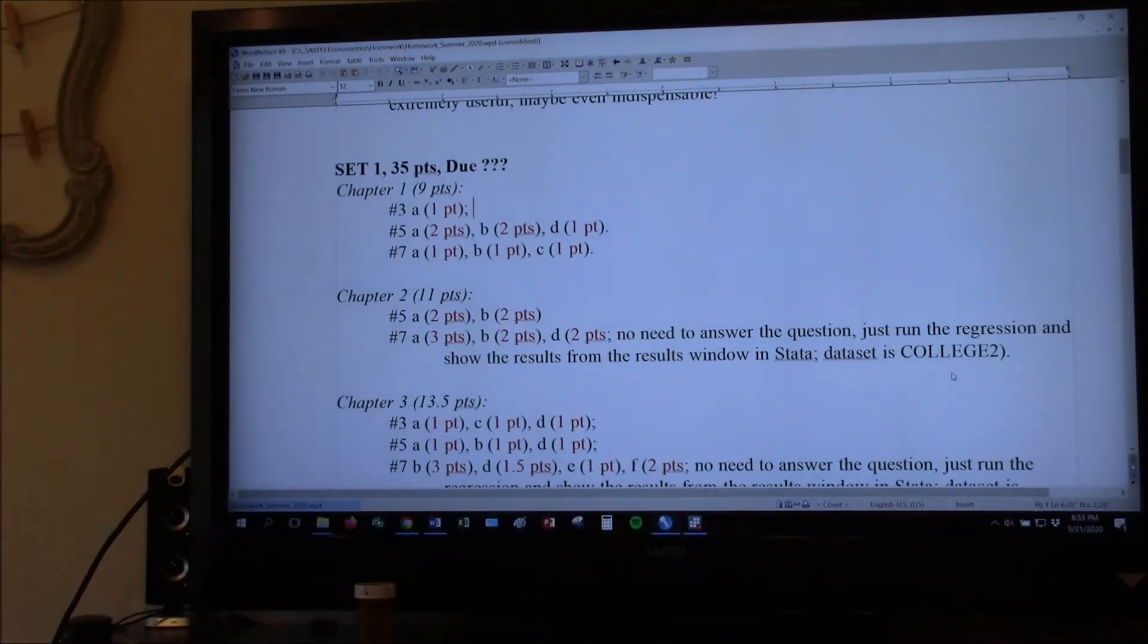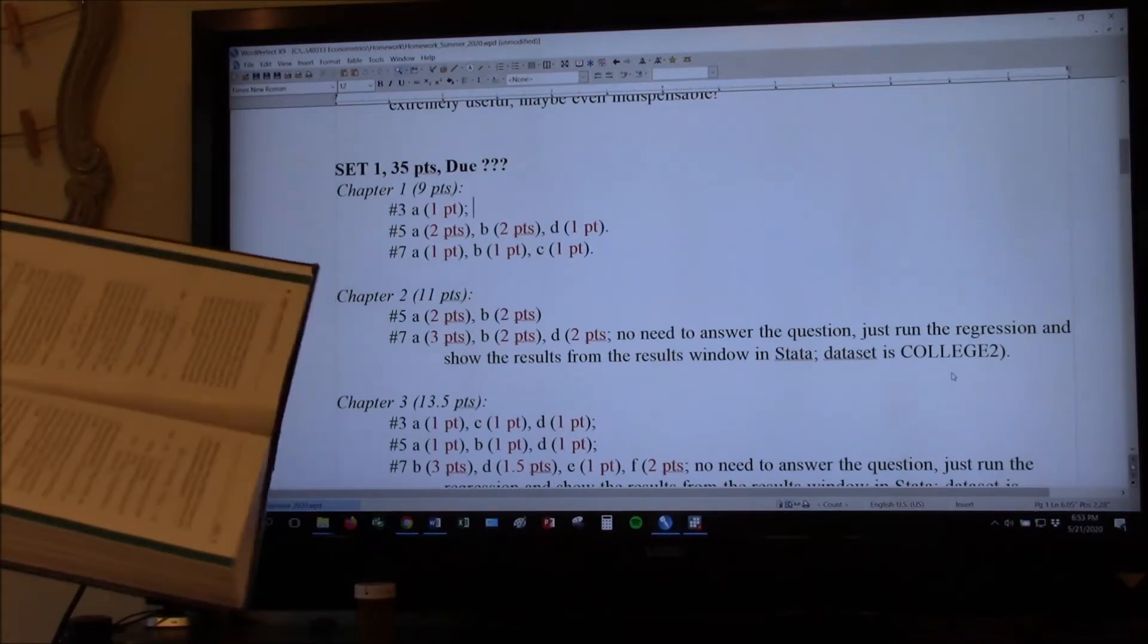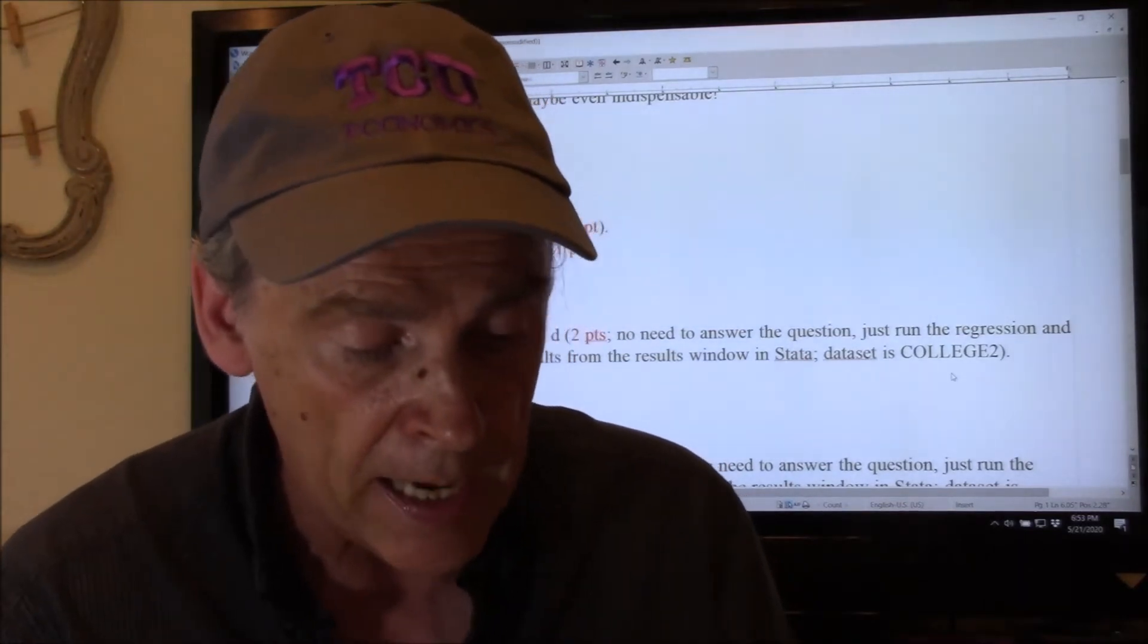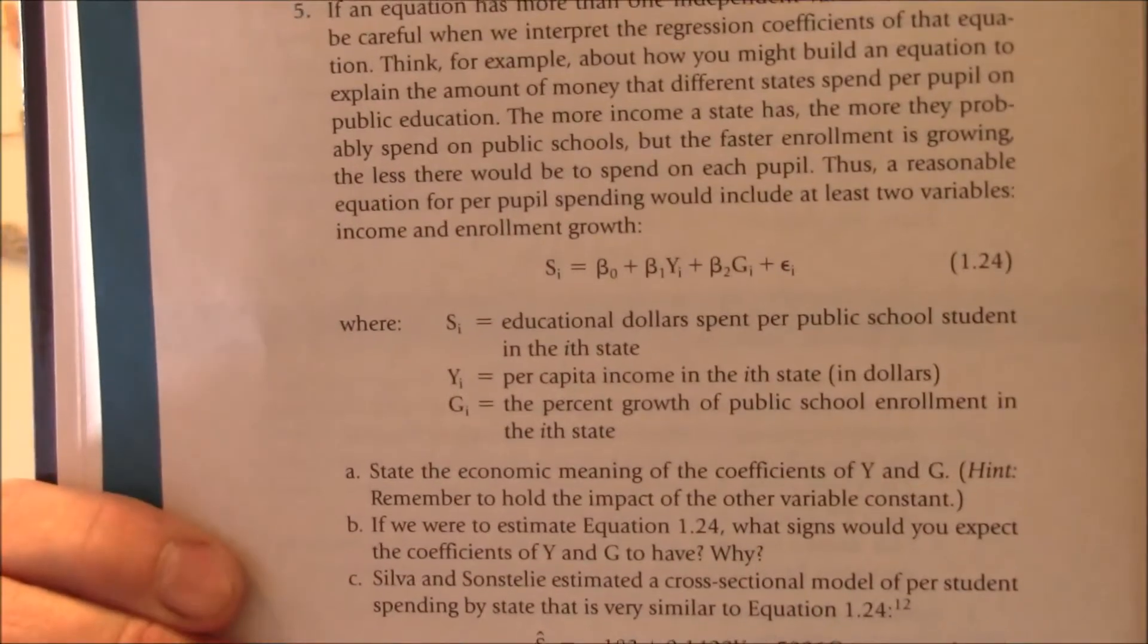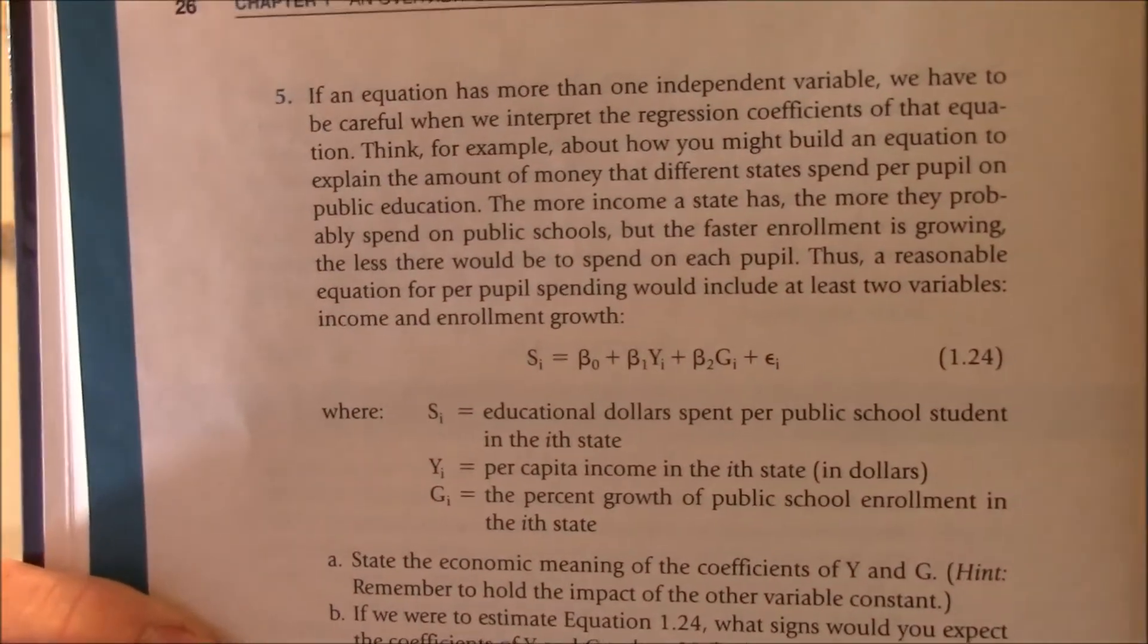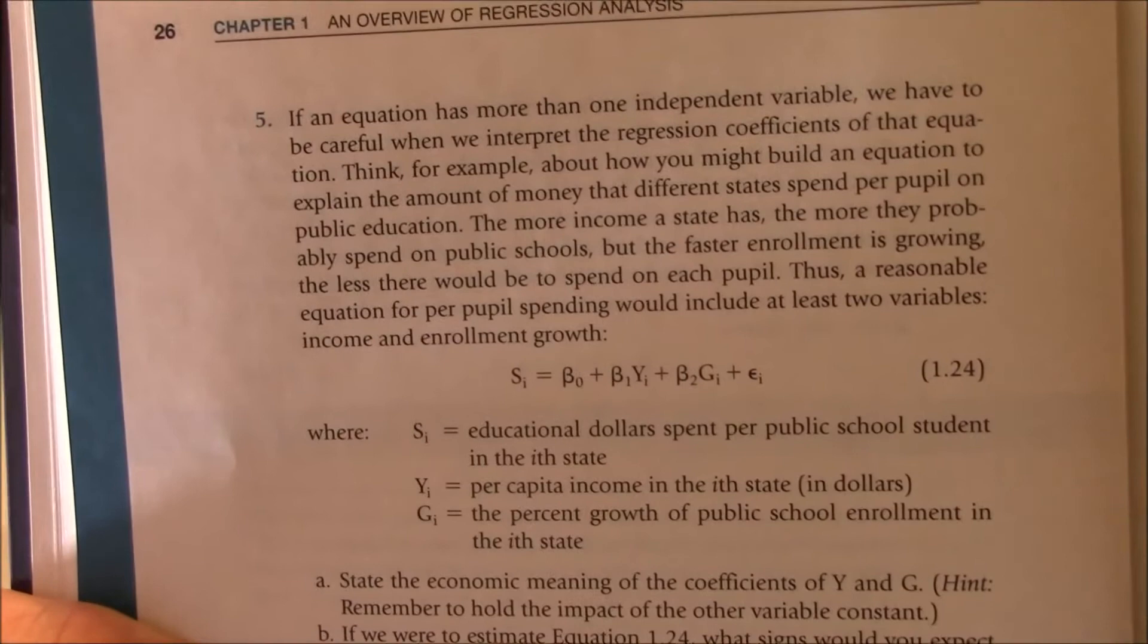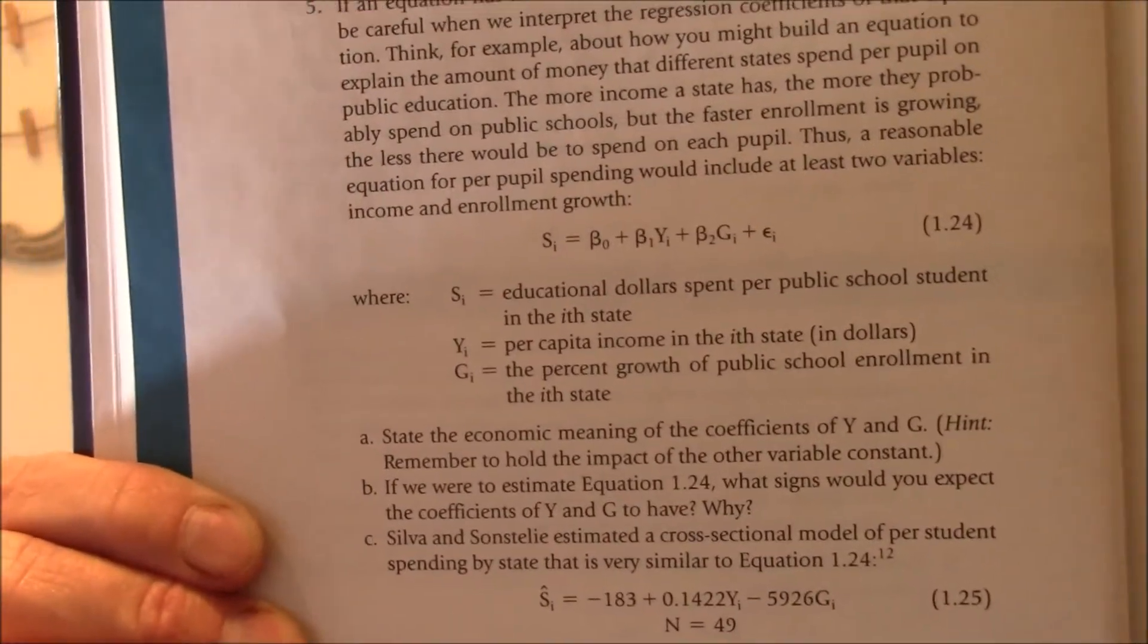All right, so that was 3a. 5a, well 5a is the same thing. State the economic meaning of coefficients Y and G. They're really asking you to do the same thing you just did on 3a. Just tell me specifically in terms of those units what the beta sub 1 means and what the beta sub 2 means. But notice he has a hint there: remember to hold the impact of the other variable constant.